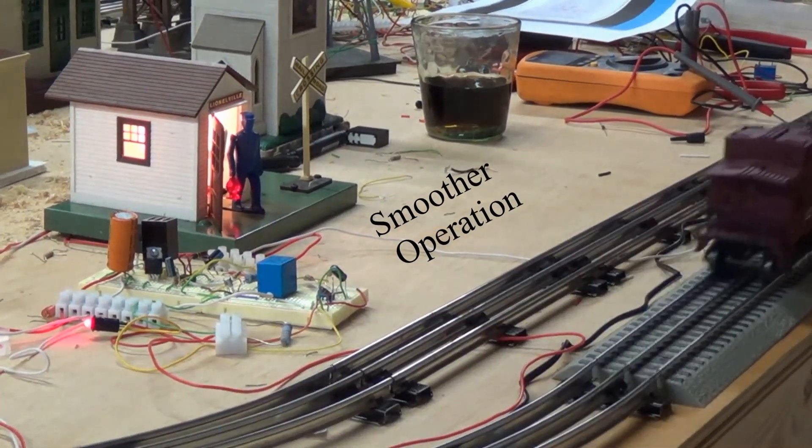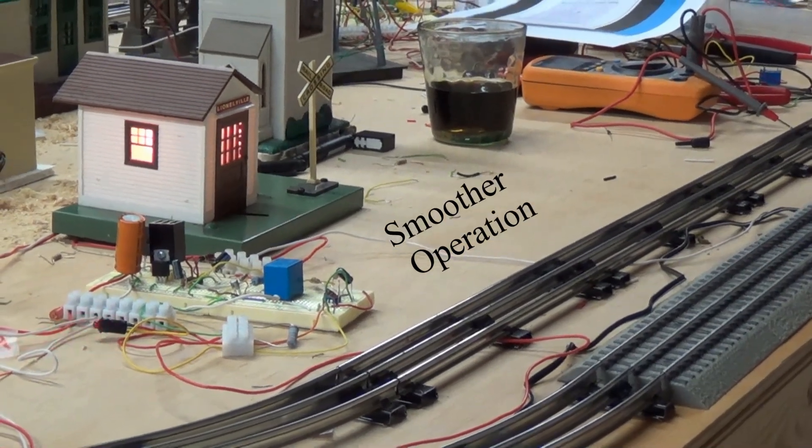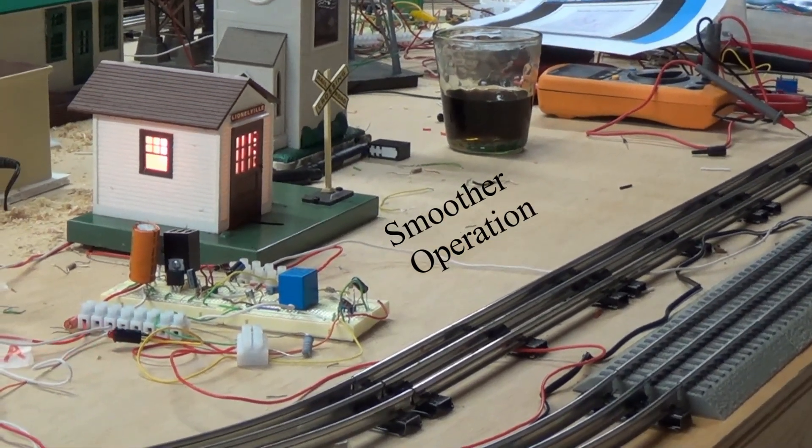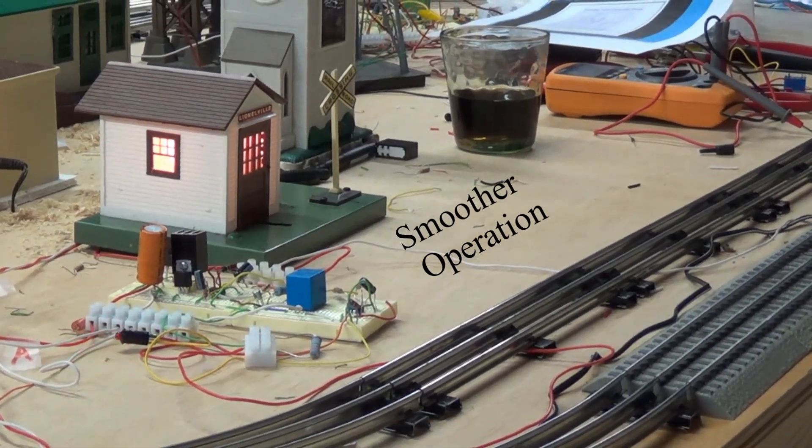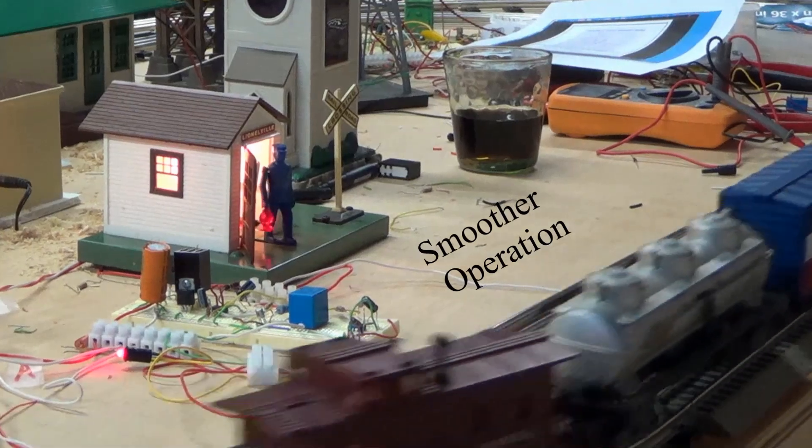I have added a flashing light to the circuit board to indicate the circuit is operating successfully. The other thing I learned is that the circuit operates better if I place a diode between the outside rail and ground on the circuit board.